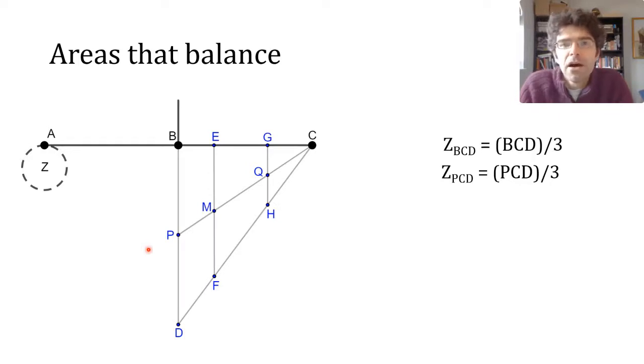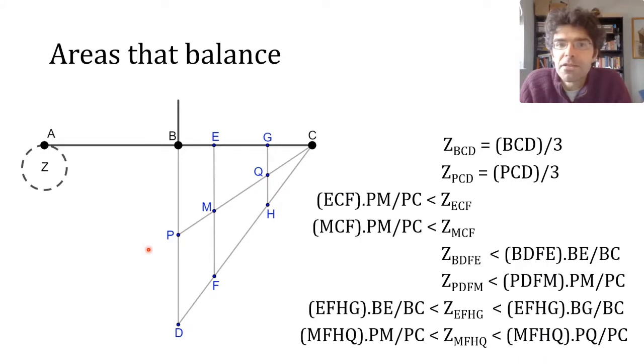With other shapes, Archimedes just sets up rough limits using the fact that the centre of mass lies somewhere within the boundary of each shape. If we take the last example on the slide, the Z that would balance MFHQ, its area, compared to the area of MFHQ itself, must be the inverse of the ratio between the distances, so between AB and the horizontal distance from B to the centre of mass of MFHQ.